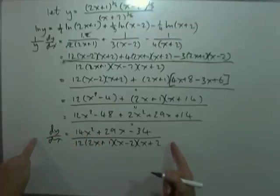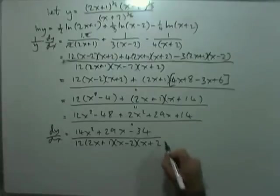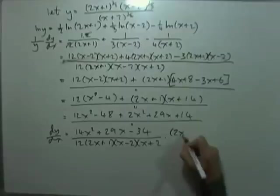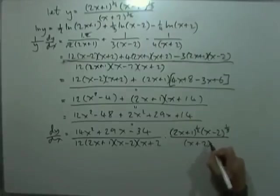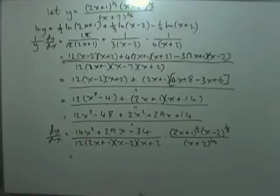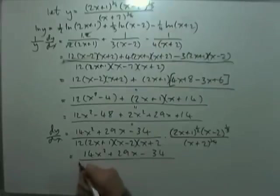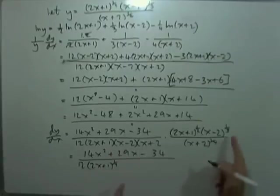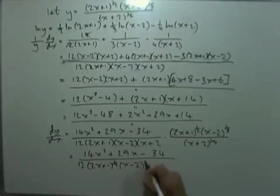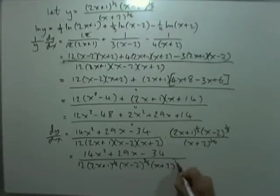That was (1/y) · dy/dx equal to that expression, so to get dy/dx on its own, multiply across by y — which was originally (2x + 1)^(1/2) · (x − 2)^(1/3) / (x + 2)^(1/4). Combining, the final answer is (14x² + 29x − 34) all over 12 · (2x + 1)^(1/2) · (x − 2)^(2/3) · (x + 2)^(5/4). That's it done by logarithmic differentiation.